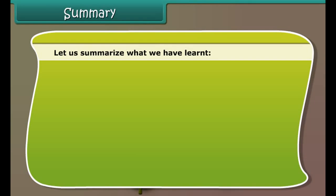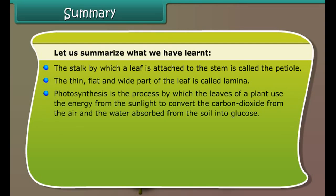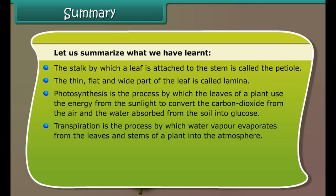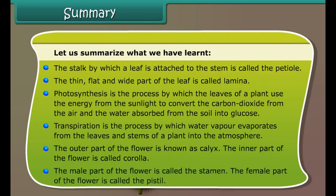Let us summarize what we have learned. The stalk by which a leaf is attached to the stem is called the petiole. The thin, flat part of the leaf is called the lamina. Photosynthesis is the process by which the leaves of a plant use energy from the sunlight to convert carbon dioxide from the air and water absorbed from the soil into glucose. Transpiration is the process by which water vapor evaporates from the leaves and stems of a plant into the atmosphere. The outer part of the flower is known as the calyx; the inner part is called the corolla. The male part of the flower is called the stamen; the female part of the flower is called the pistil.